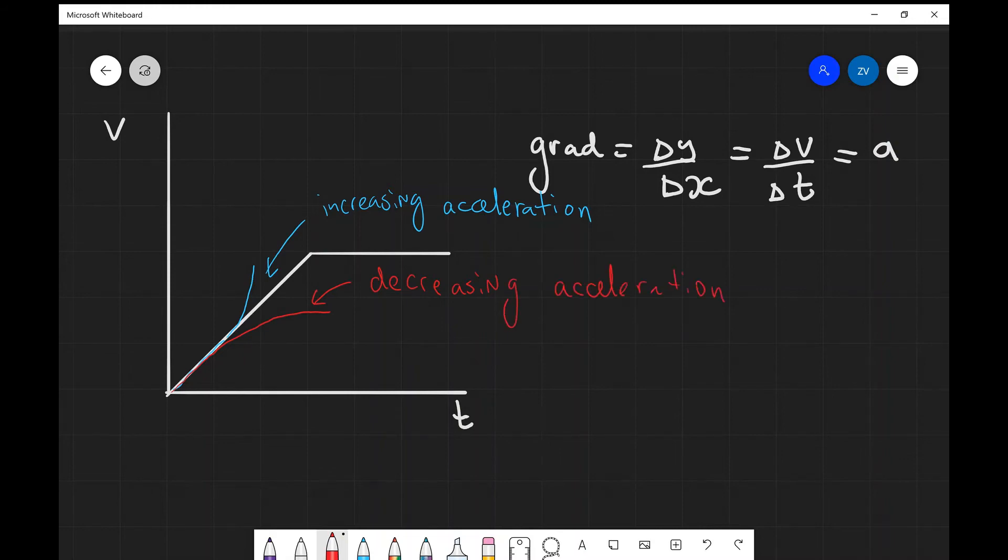The graph, this straight line section here, this of course represents constant velocity. So this is constant velocity or no acceleration. And we know this because at any point in this straight horizontal line, the velocity remains the same.